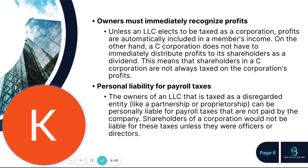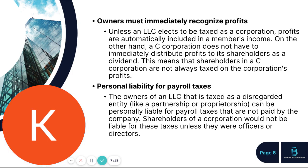Another disadvantage is that owners must immediately recognize profits. Unless an LLC elects to be taxed as a corporation, profits are automatically included in a member's income. A C corporation, on the other hand, does not have to immediately distribute profits to its shareholders as a dividend, meaning shareholders in a corporation are not always taxed on the corporation's profits.